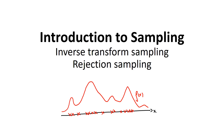Hi guys, welcome to the series about sampling. In the series I want to talk about what sampling is, what the word 'sampling' means, and then I will look at two algorithms in more detail: inverse transform sampling and rejection sampling. I want to keep this video as simple as possible — no crazy math theory, no proofs, just intuition.